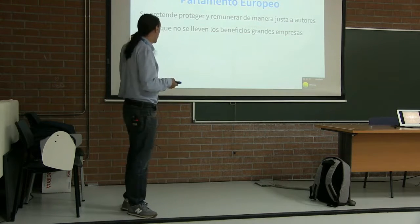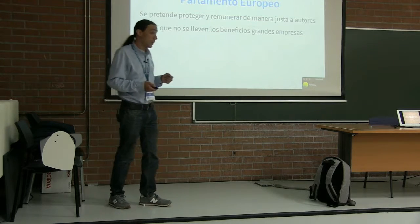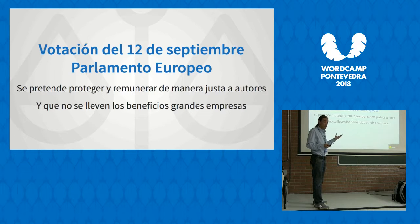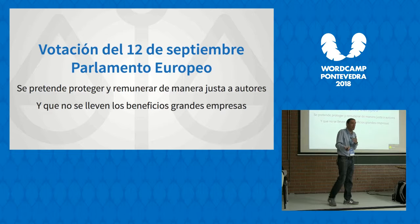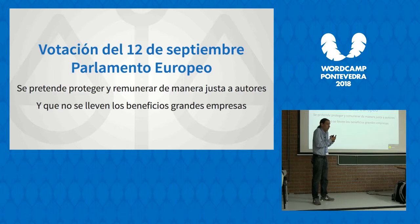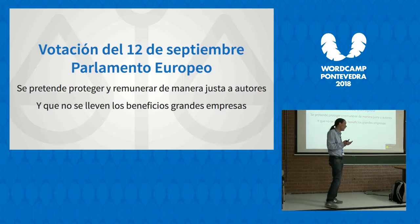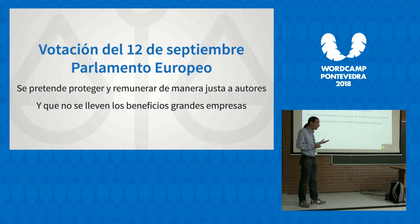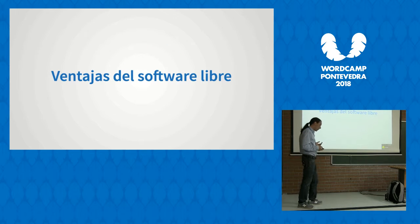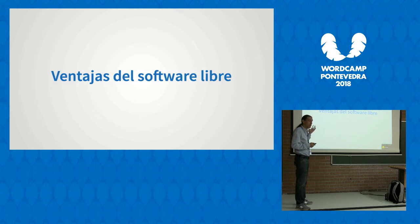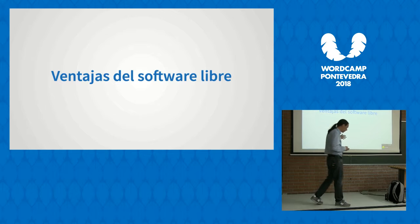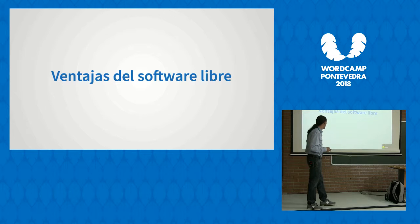Mencionar la votación que hubo hace 10 días en el Parlamento Europeo. La idea era proteger y remunerar de manera justa a los autores que están generando cultura — libros, música, vídeos, películas. La idea es que no se lleven los beneficios las grandes empresas. Por ejemplo, un autor publica una ilustración en Facebook y al final, ¿quién le saca rentabilidad? La plataforma. El autor la publicó gratis y Facebook es quien le saca rendimiento, porque la gente es donde ve esa ilustración.